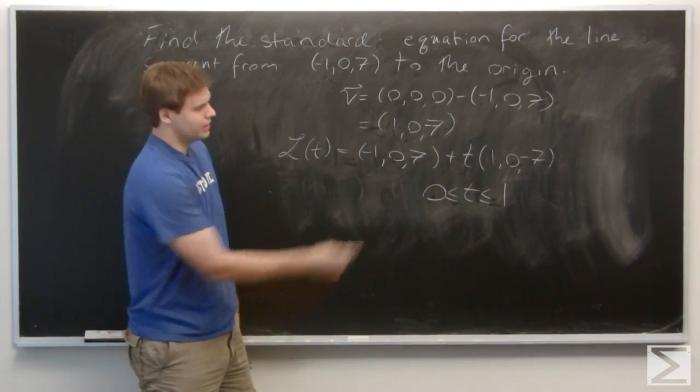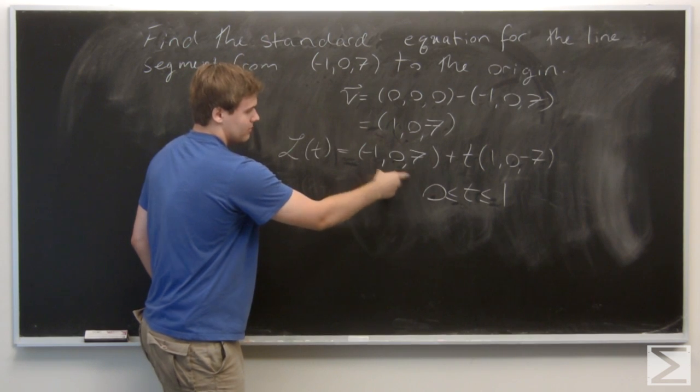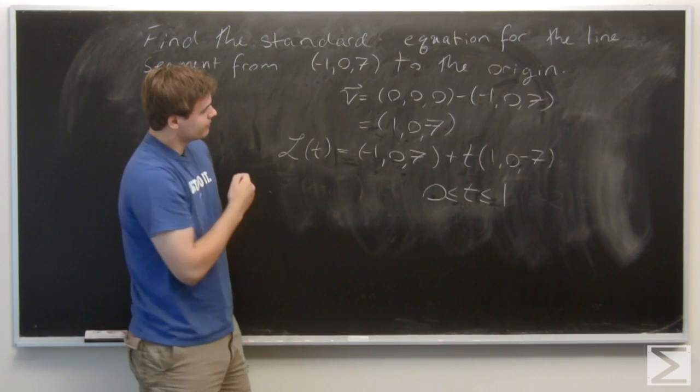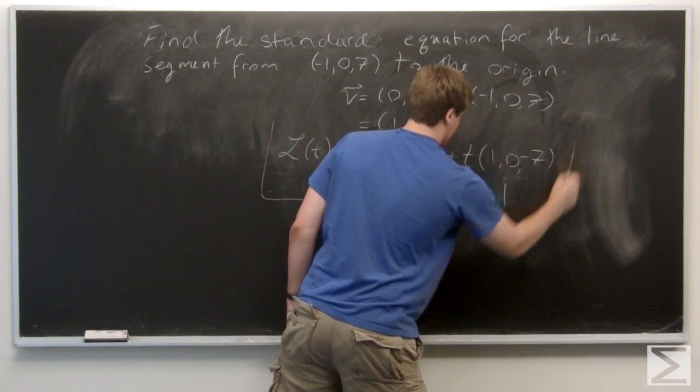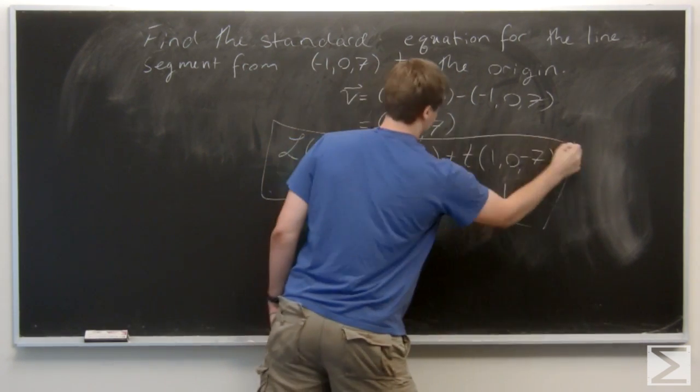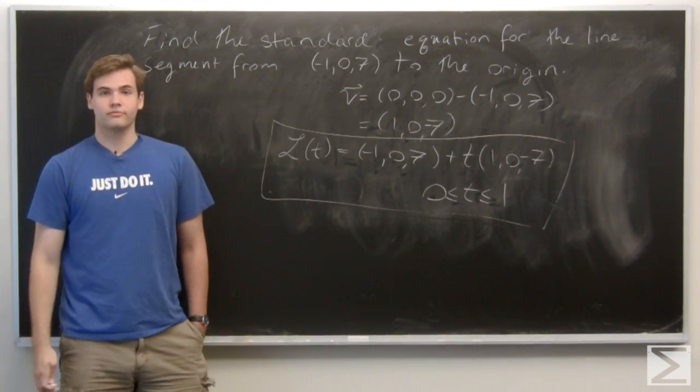So for example, if you plugged in 0, you get the initial point. And if you plugged in 1, you get the origin, and then that parametrizes our line segment. And that's it.